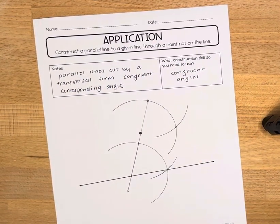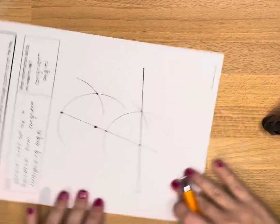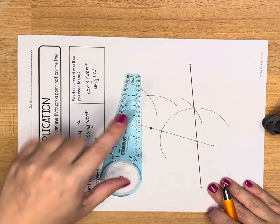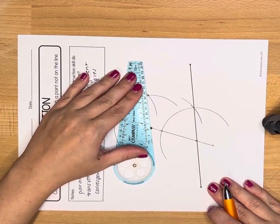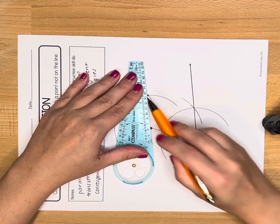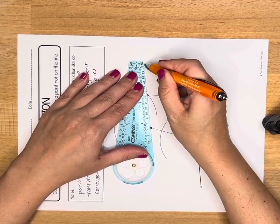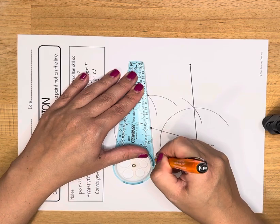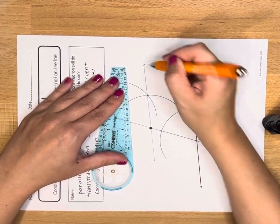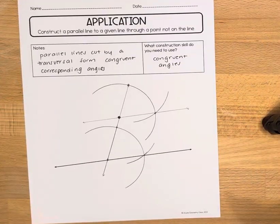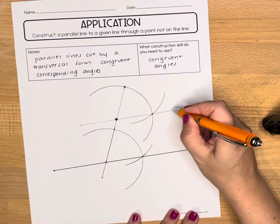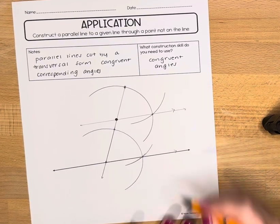With that intersection I'm going to bold it, and I'm just going to turn my paper here for a second. I'm going to use my straight edge to connect the original point to that intersection, and now I have my parallel line that goes through that initial point that the problem gave us.